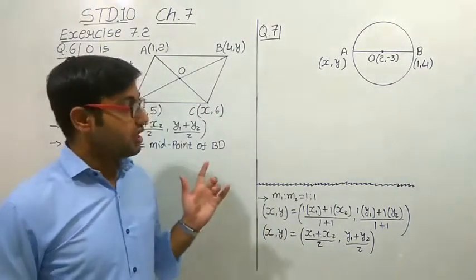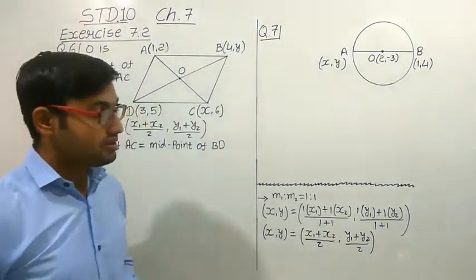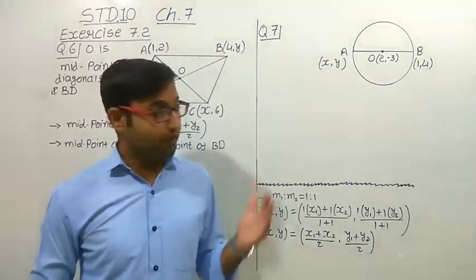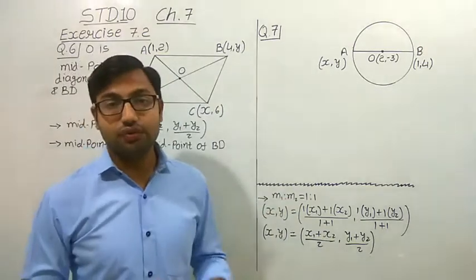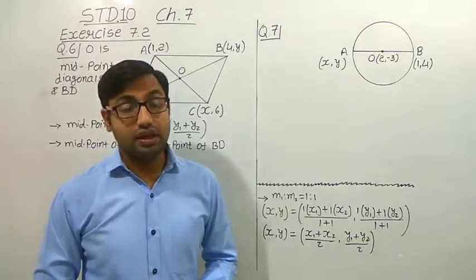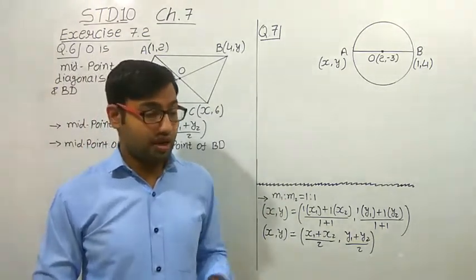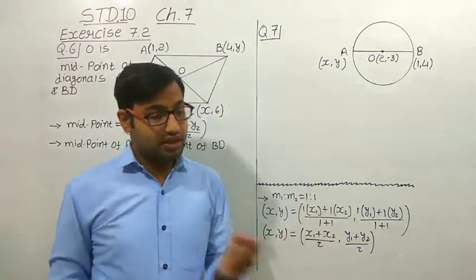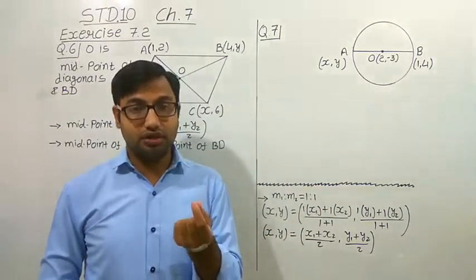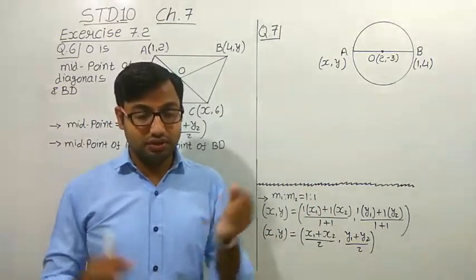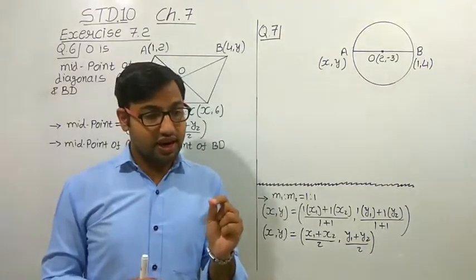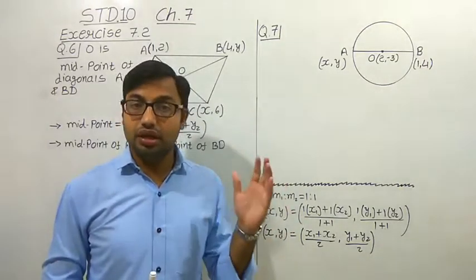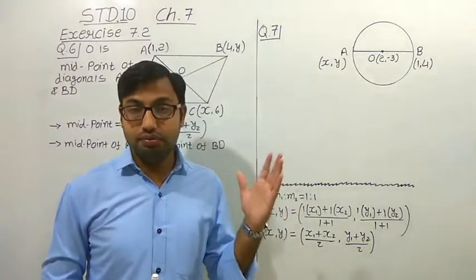Before we study these examples, let us remember that before this we have studied the section formula. And the section formula is: if three points are on the same line, then the point which is in between the two points divides the line segment in some ratio, in some proportion.